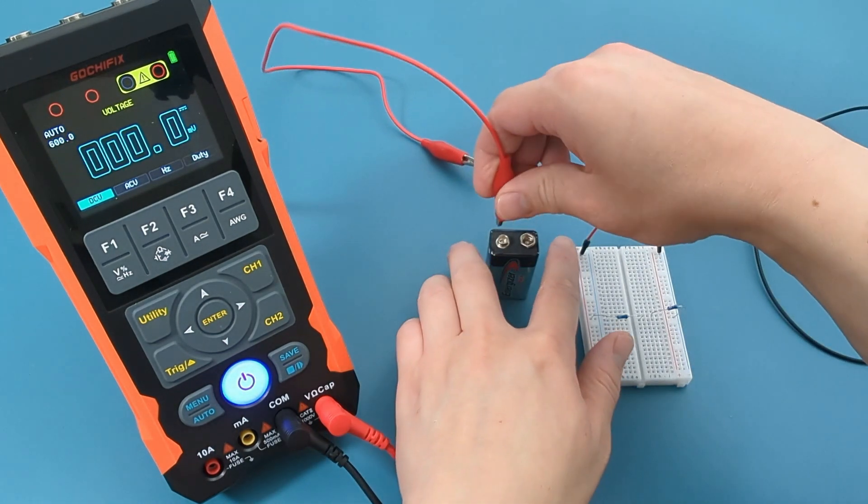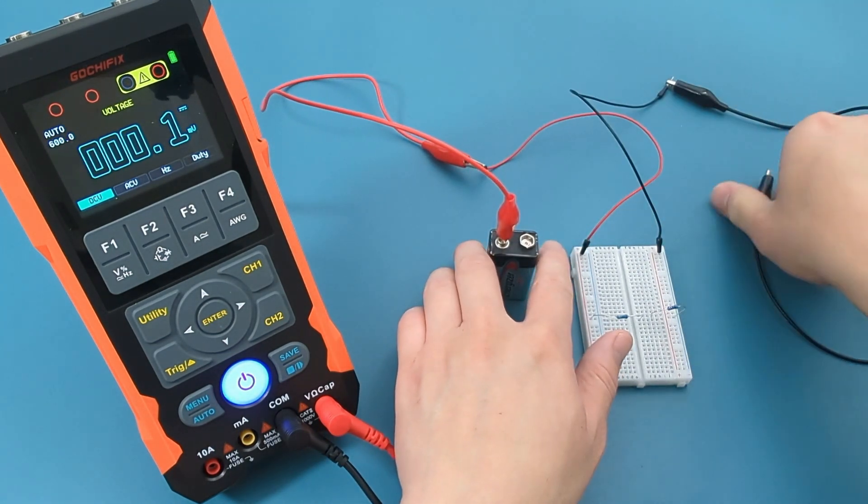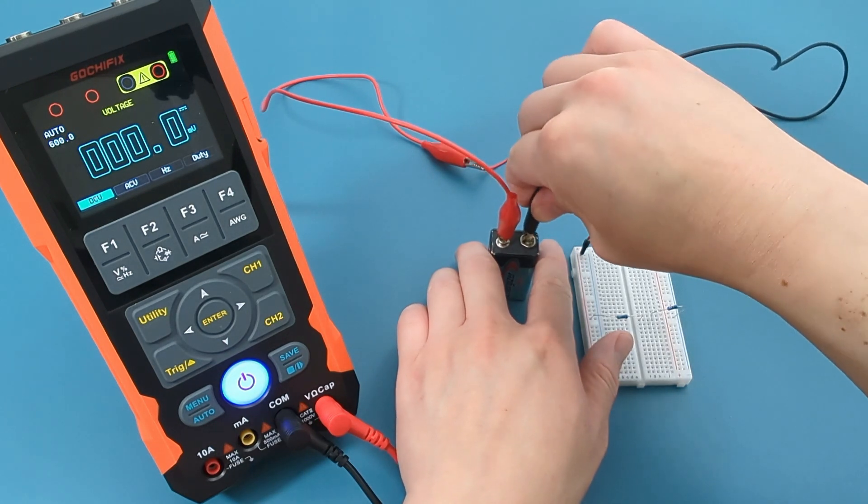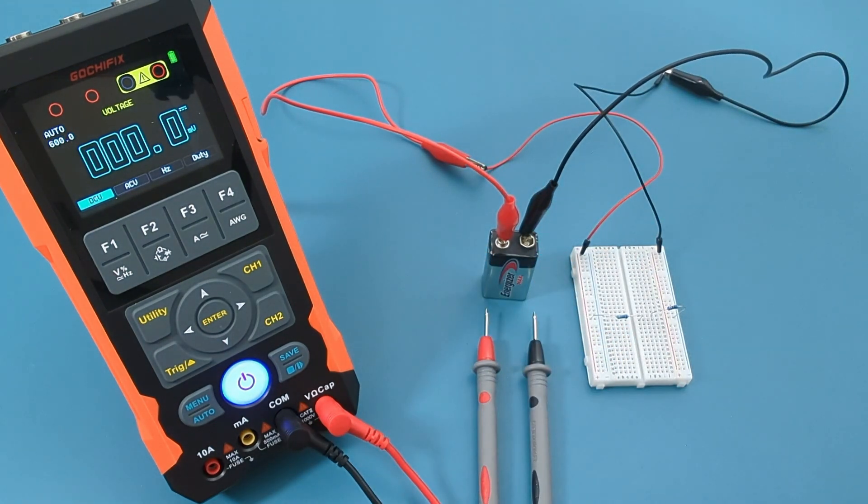Connect the other end of the red alligator clip to the positive terminal of the battery. Connect the other end of the black alligator clip to the negative terminal of the battery.